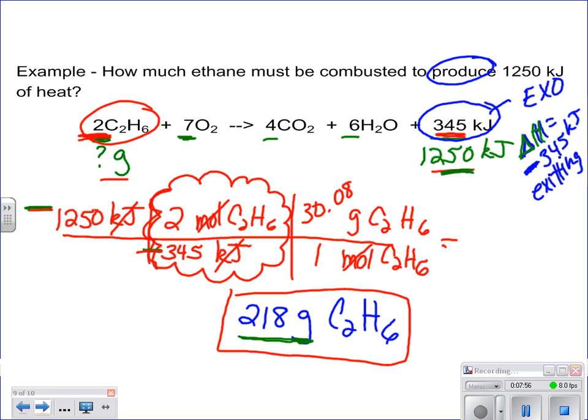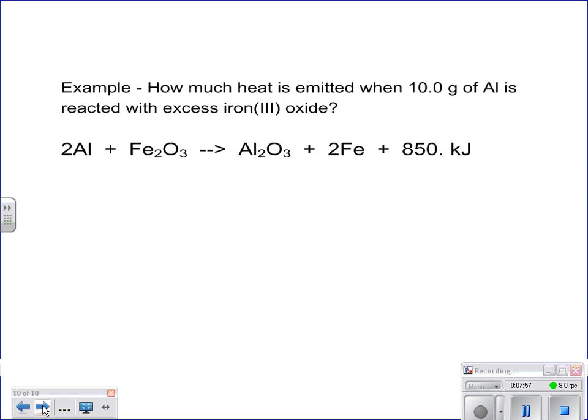Let me show you where that really comes into play. Next one, it says, how much heat is emitted? Well, I'm going to go over here to kilojoules, and I'm going to say, question mark, kilojoules. When I start with 10 grams of aluminum and react with more than enough of that iron 3 oxide for this to take place.